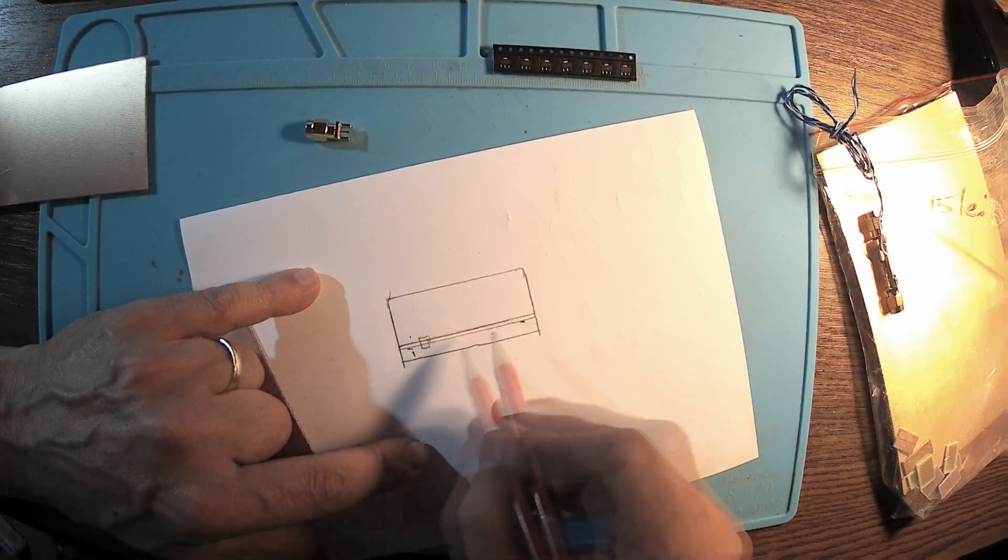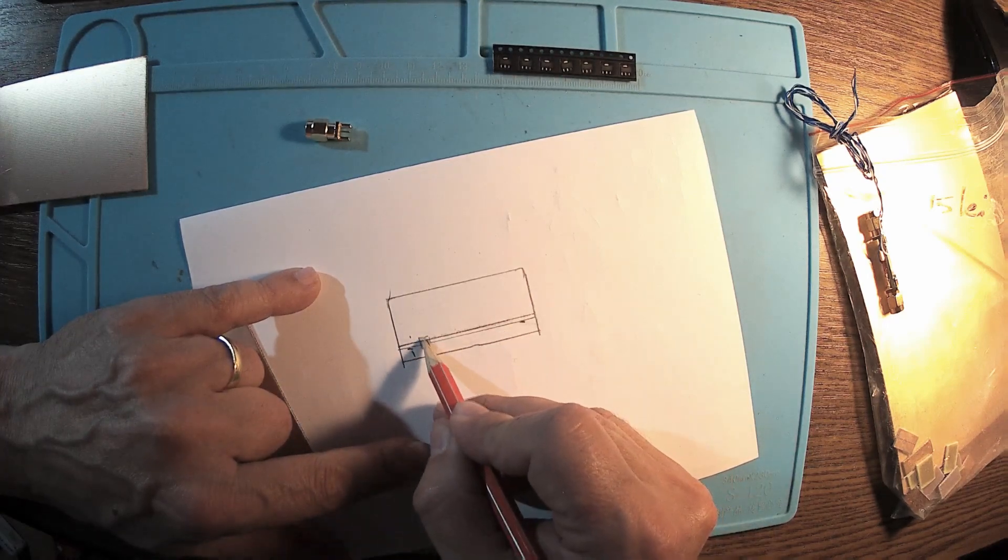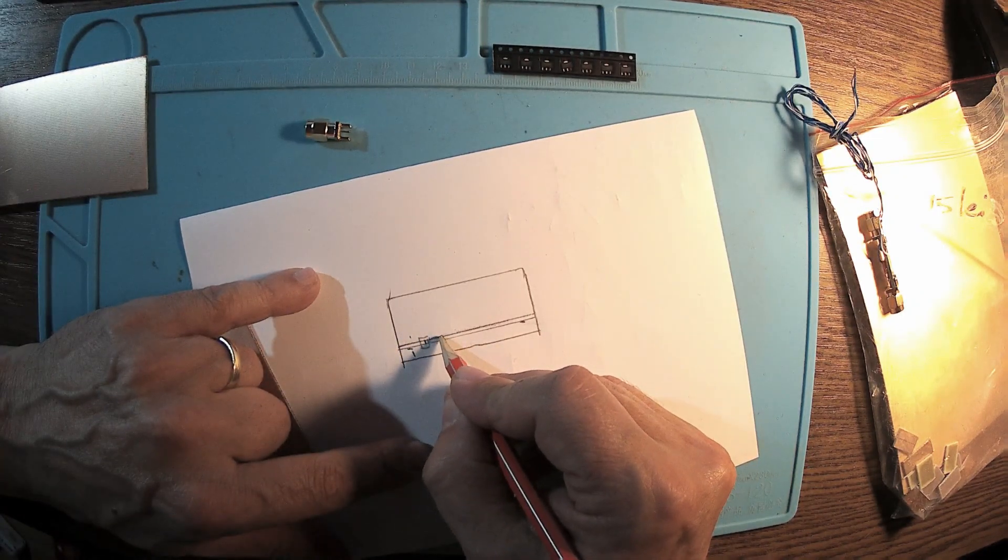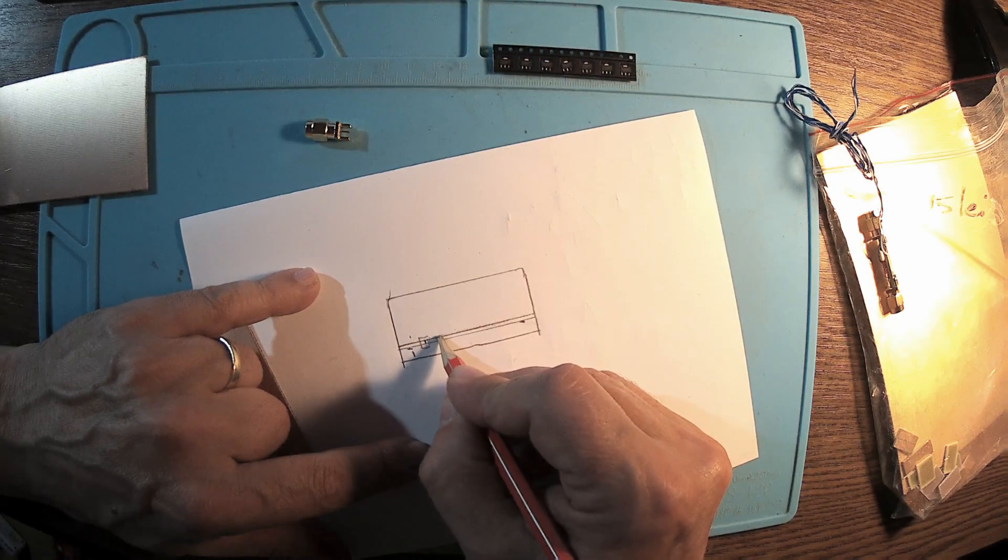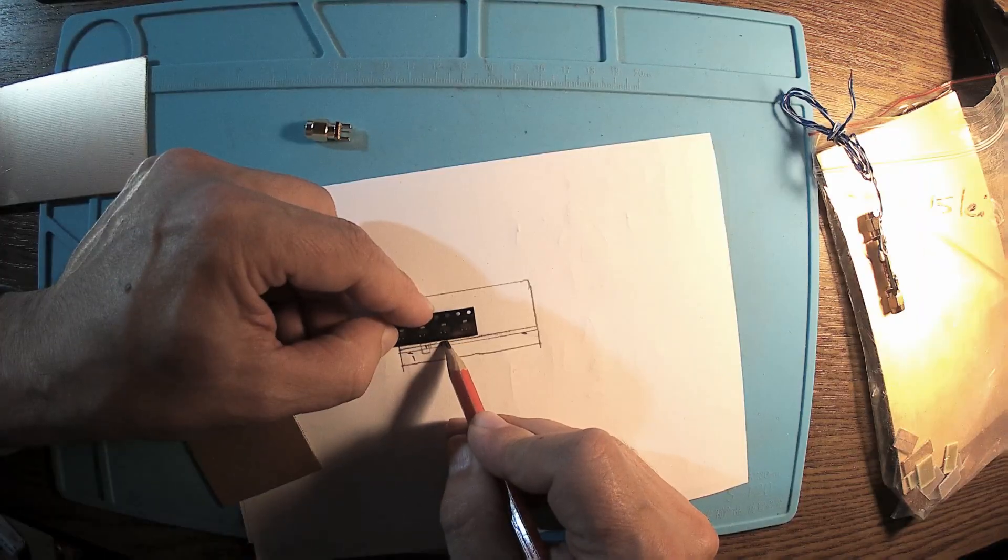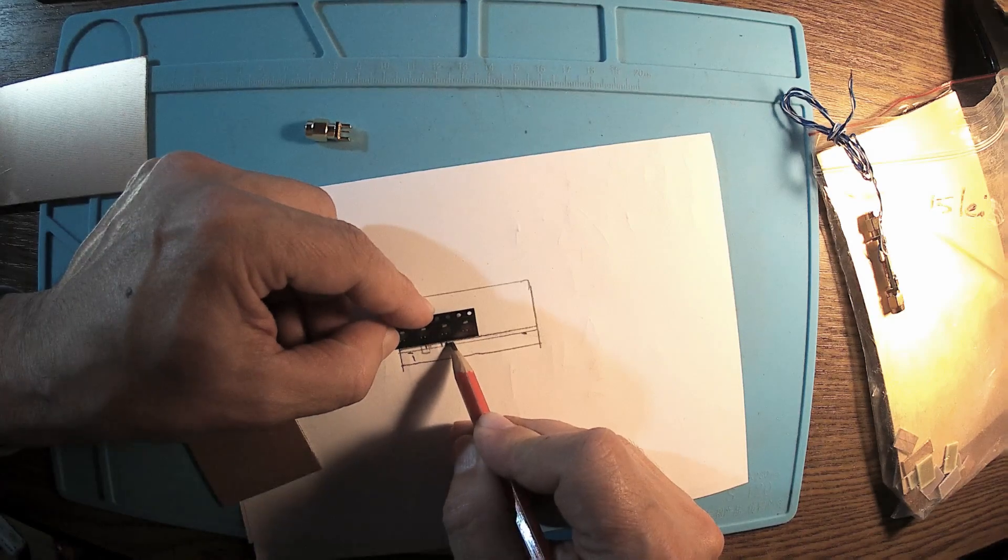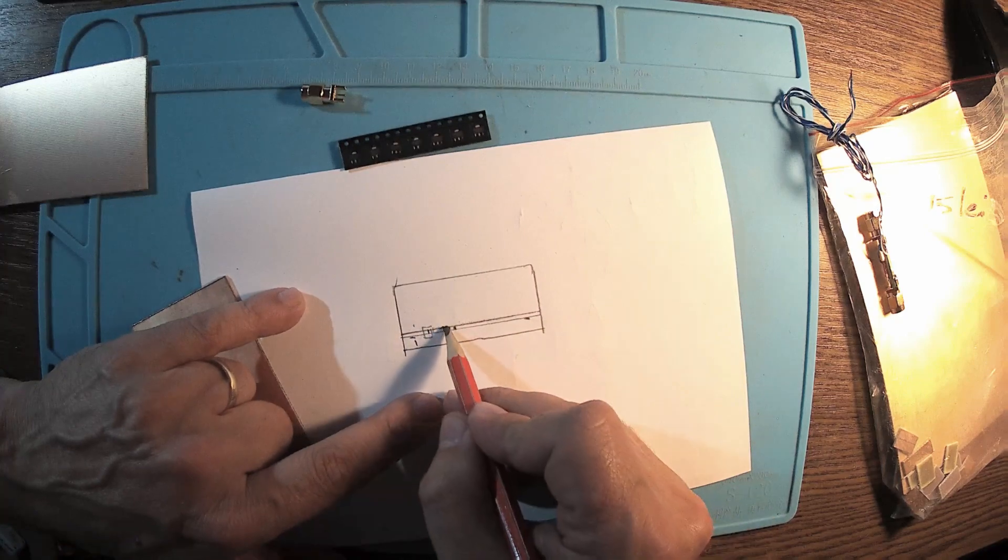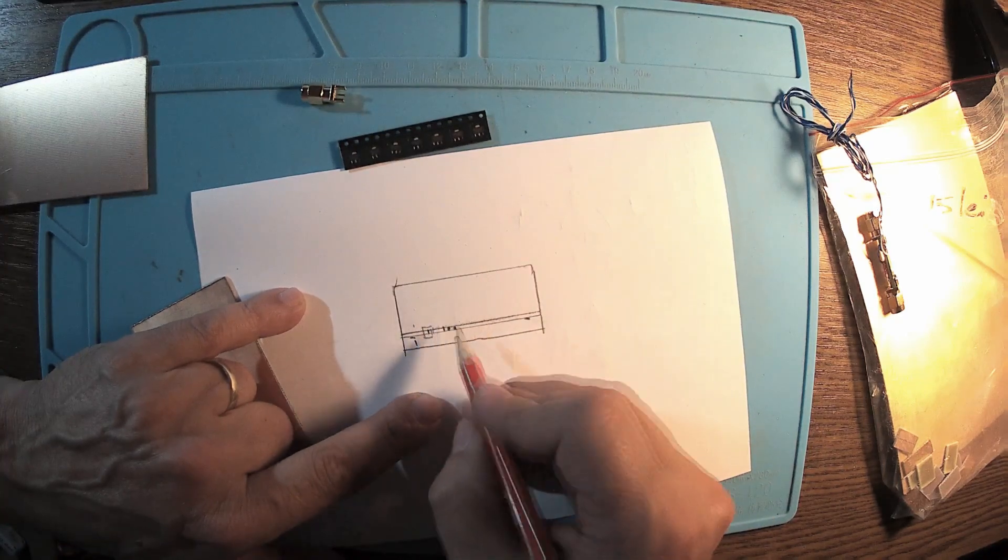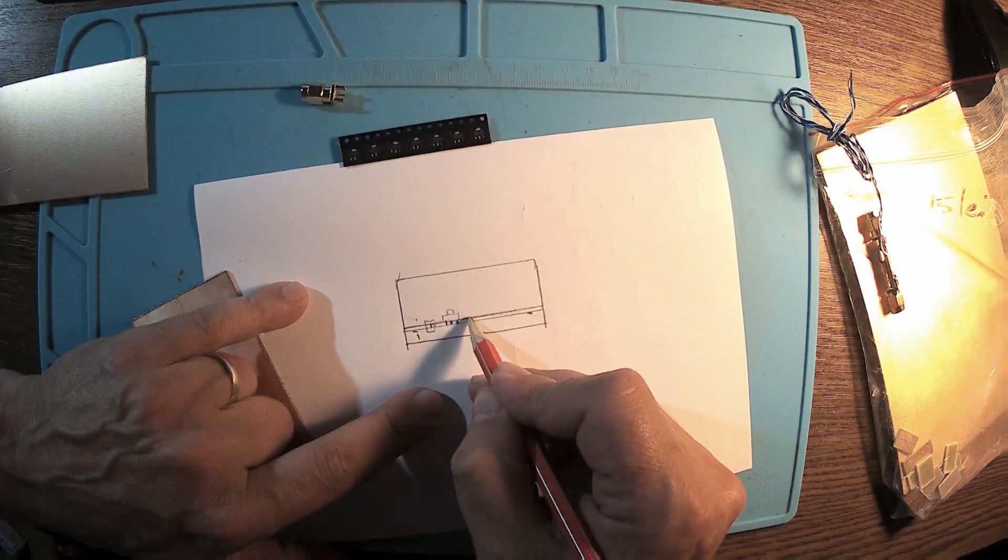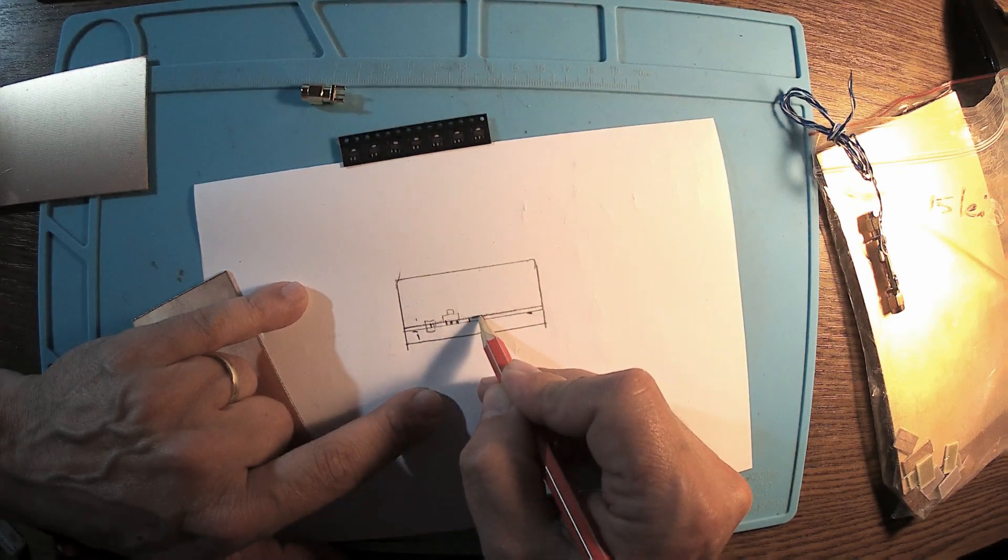Then here we can have the filter, the small filter. I'm going to have the transistor right here, so pin one, middle pin, and pin number three. All I have to do is cut two lines in the middle here. Then we have the capacitor output and the connector.